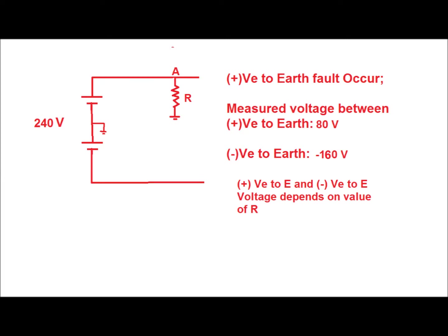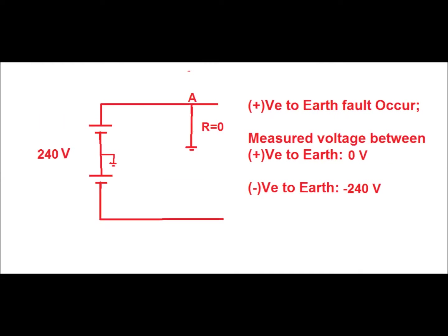The positive to earth fault voltage depends on the value of resistance. If the resistance value is almost zero — that is, if it is a solid earth fault — then the positive to earth voltage will come to zero, and on the other hand the negative to earth voltage comes to minus 240 volt.